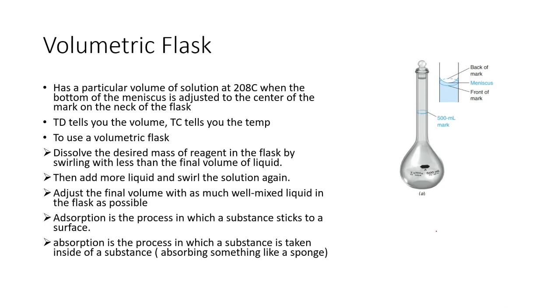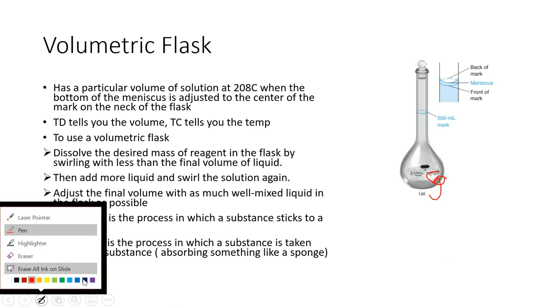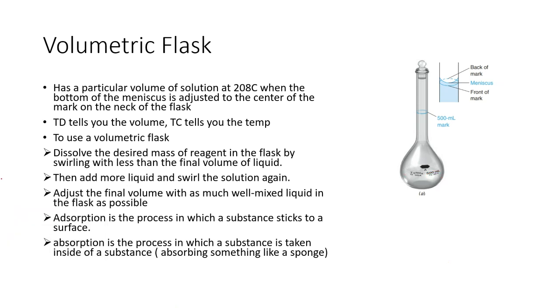Another glassware used for volume is volumetric flask. It has a particular volume of solution at 20 degrees Celsius when the bottom of the meniscus is adjusted to the center of the mark on the neck of the flask. It always has TC and TD. TC tells you the temperature - it's 20 degrees Celsius. TD is the volume, which is 500 milliliters in this case.